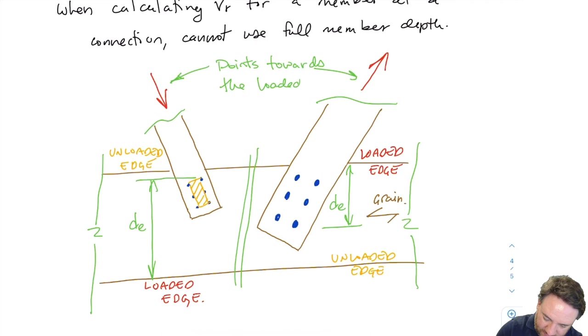The load arrow points toward the loaded edge — that's how you remember which edge is loaded and which is unloaded.